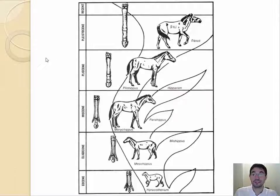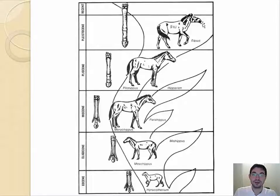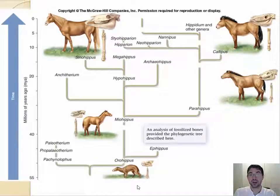That said, if those toes are useful, then having fewer of them — some mutation — would actually be harmful and would not get passed on. You can see that Mesohippus and Myohippus lived at the same time as Merihippus, and Hipparion lived at the same time as Pliohippus, eventually leading up to modern Equus, the horses of today. Do not memorize these names, but this is a really interesting and pretty complete example of fossils showing change over time, which is what evolution is.